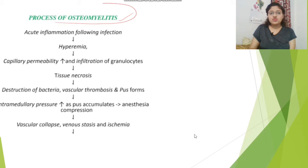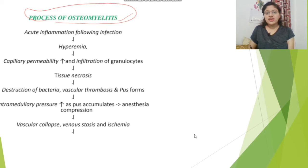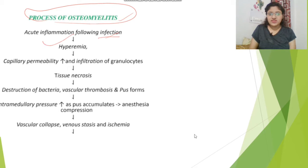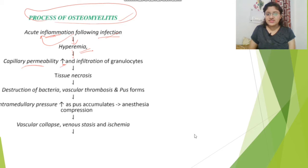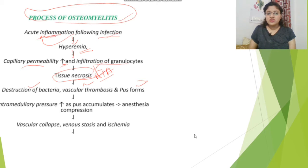The pathophysiology of osteomyelitis: first there is acute inflammation following infection, then hyperemia starts, capillary permeability increases, and cell mediators increase. This leads to demand of bacteria, vascular thrombosis, and pus formation. Ultimately, bacteria are killed and tissue necrosis occurs — all leading to pus formation.